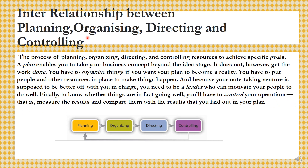The interrelationship between planning, organizing, directing and controlling. The process of planning, organizing, directing and controlling resources is to achieve specific goals. A plan enables you to take your business concept beyond the idea stage, but it does not get the work done — you have to organize things if you want your plan to become a reality. You have to put people and other resources in place, be a leader who can motivate your people to do well, and finally, to know whether things are going well or not, you will have to control your operations — measure the results and compare them with the results laid out in your plan. Everything starts from planning, goes through organizing, directing and controlling to give you your desired results.